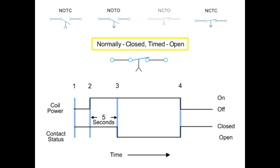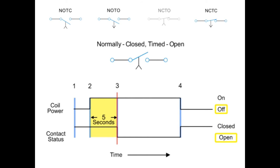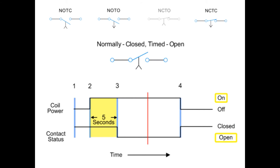Thus, the contacts close immediately when the coil is energized and open five seconds after the coil is de-energized. Next, we have the normally closed, timed open contact. This type of contact is normally closed when the coil is unpowered or de-energized. The contact is opened with the application of power to the relay coil, but only after the coil has been continuously powered for the specified amount of time — in this case, five seconds. Thus, the contacts open five seconds after the coil is energized and close immediately when the coil is de-energized.